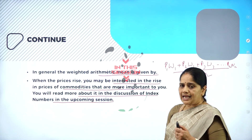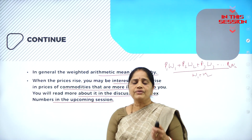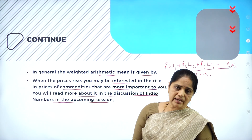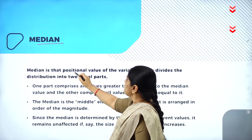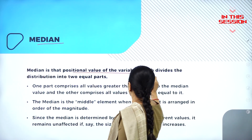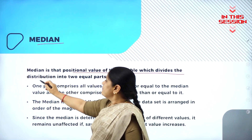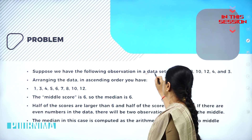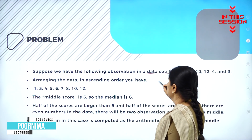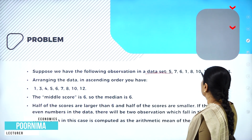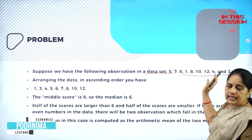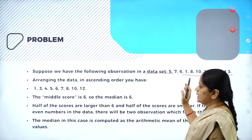When you want to find out the rise in prices of any of the commodities, you add weights to it and then you can find the result. Median is that positional value of the variable which divides the distribution into two equal parts. Suppose we have the following observations in a data set: 5, 7, 6, 1, 8, 10, 12, 4 and 3. This is the data given to find out the median.